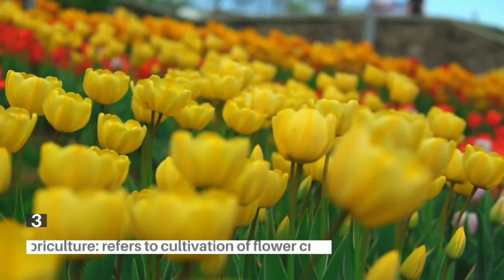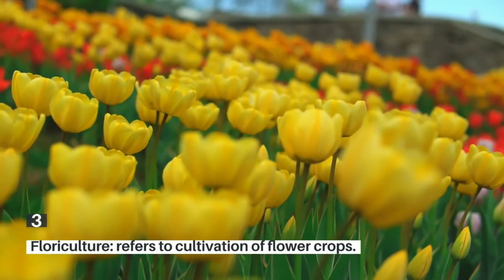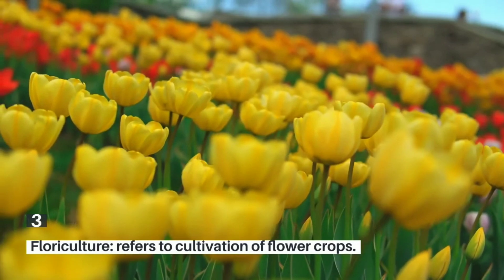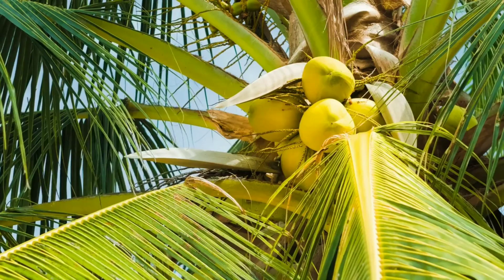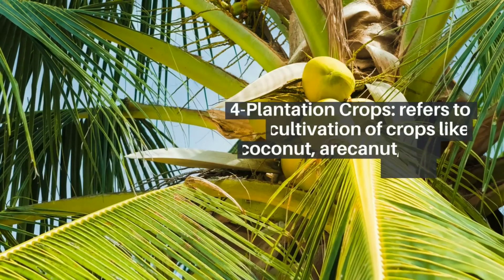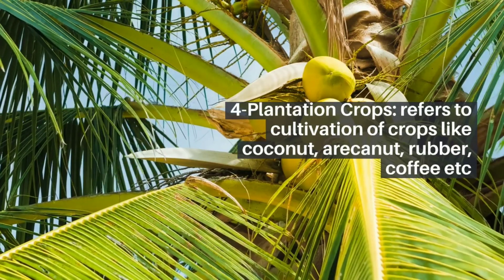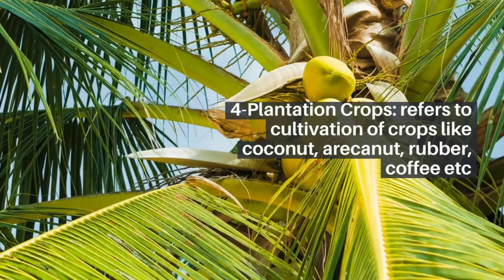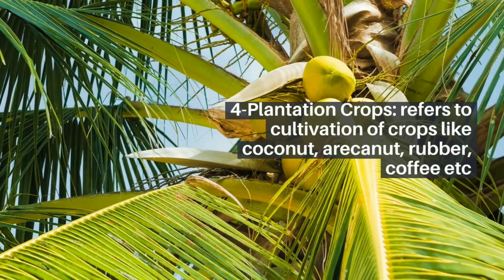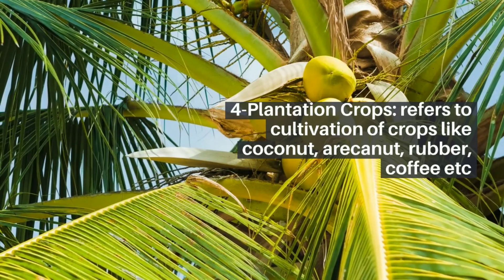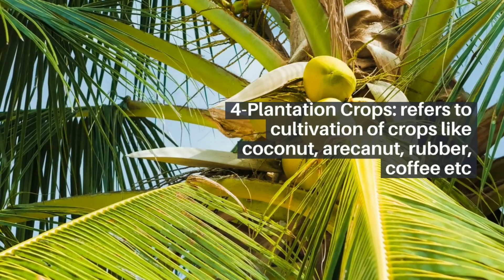The third branch is floriculture. It refers to the cultivation of flower crops. The fourth branch is plantation crops. It refers to the cultivation of crops like coconut, areca nut, rubber, coffee, cashew, etc.